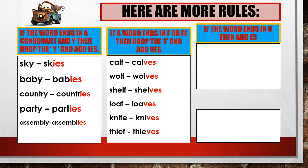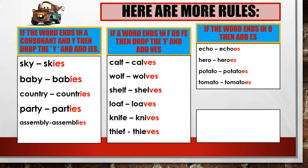If the word ends in O, then add ES. These are some examples: one echo, many echoes. One hero, many heroes. One potato, many potatoes. One tomato, many tomatoes.